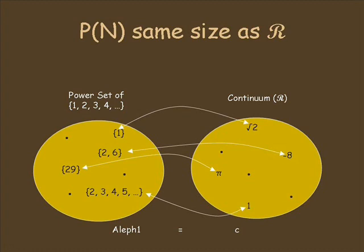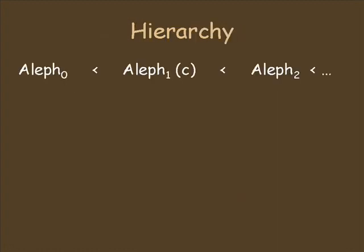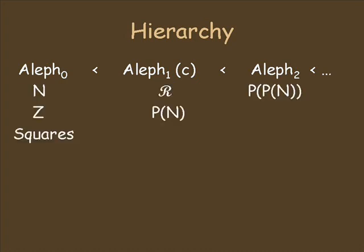To put all this in perspective, we have found a hierarchy of infinities — from the counting numbers, to the real numbers, to sets with larger infinities still. But just because we have infinitely many infinities doesn't mean that we've found them all.